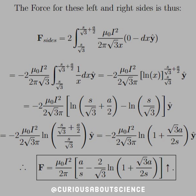The left point of the triangle in the X direction starts at S over square root 3, and we integrate only to the midpoint — S over square root 3 plus A over 2 — since we're doubling by symmetry. We're integrating mu naught I squared over 2 pi root 3 X, with the cross product cancellation leaving negative dX Y-hat. Since everything except 1 over X is constant, we factor it out, leaving a simple natural log integral of 1 over X dX in the Y-hat direction.